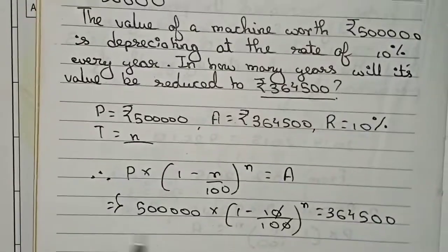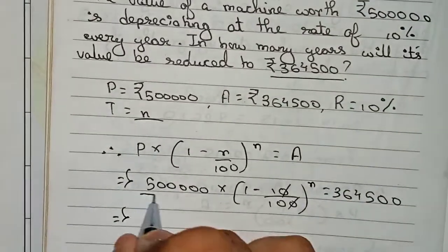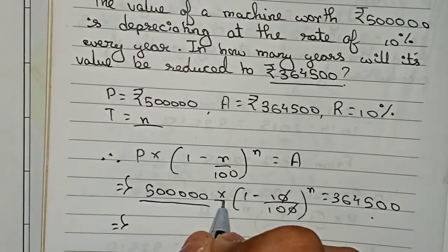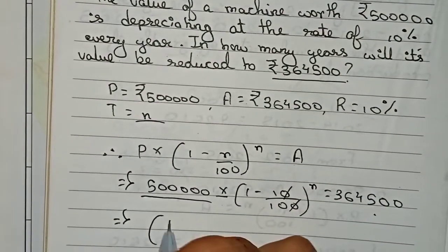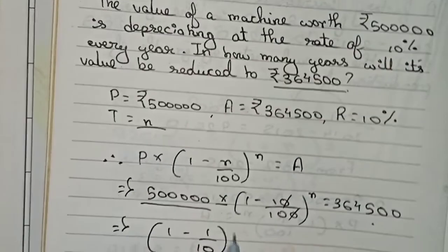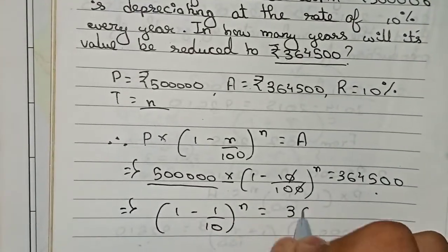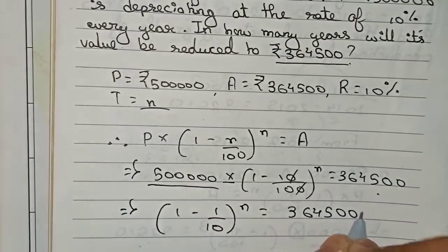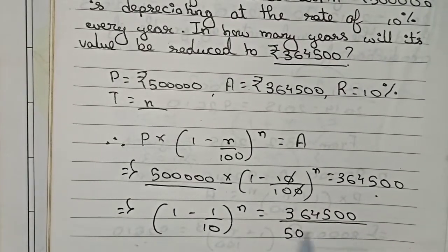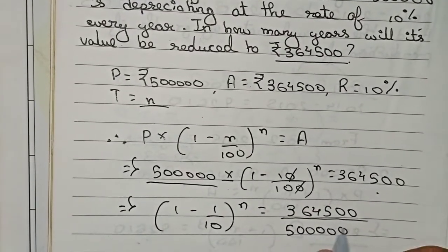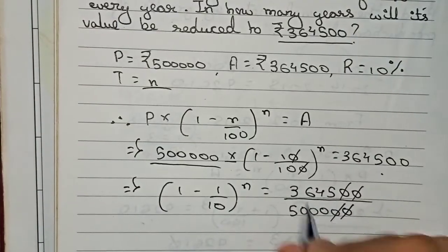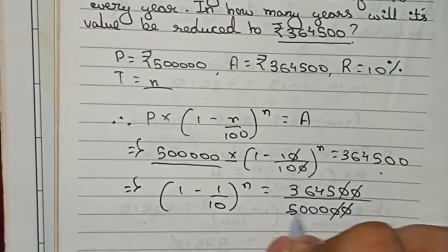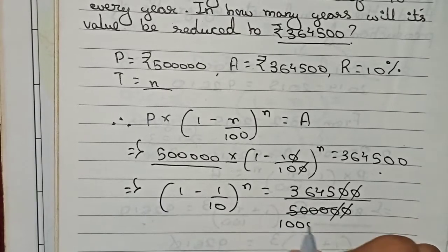Now I take this 5 lakh to the other side. As it's in multiplication here, it will go for division to that side. So (1 - 1/10) to the power n equals 3,64,500 divided by 5 lakh. First we cancel the zeros, then divide these numbers by 5.